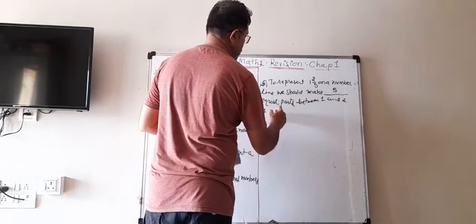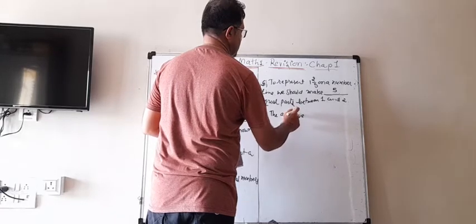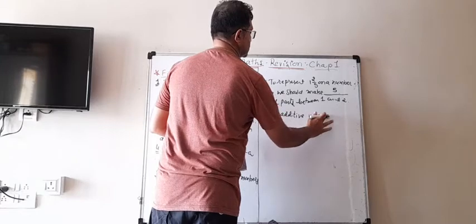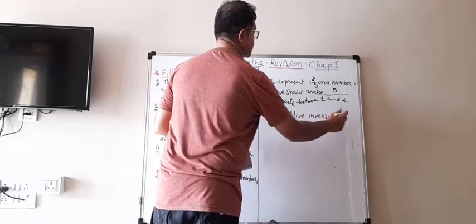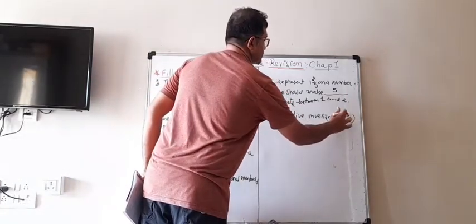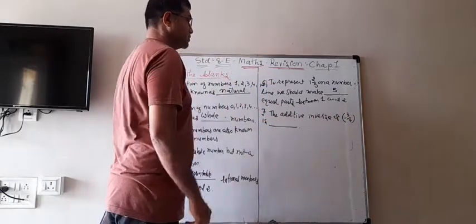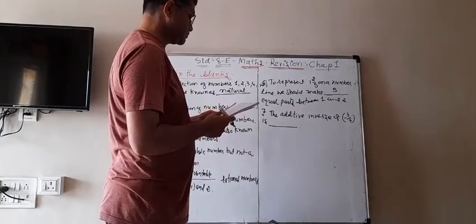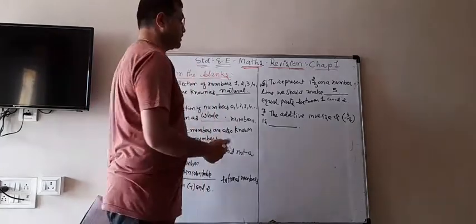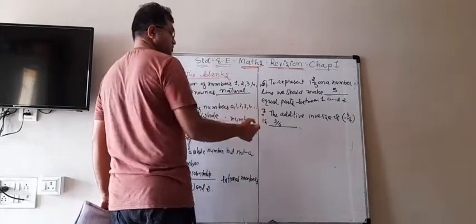Number 7. The additive inverse of minus 3 upon 4 is blank. Now, additive inverse means you just have to change the sign — plus to minus or minus to plus. So the answer is 3 upon 4 itself; just change the sign.